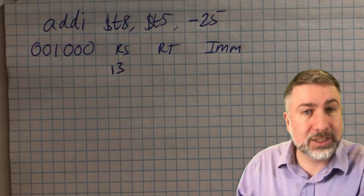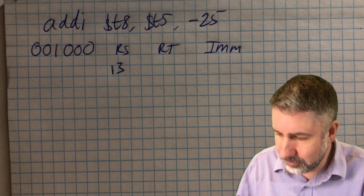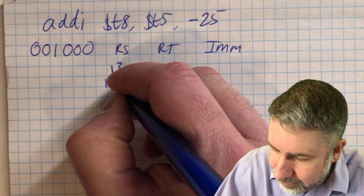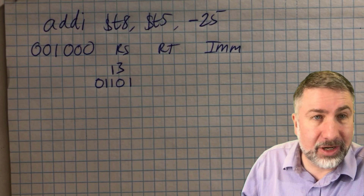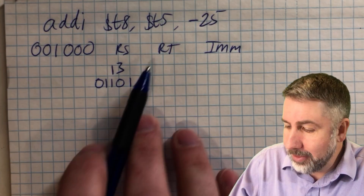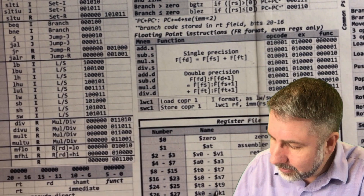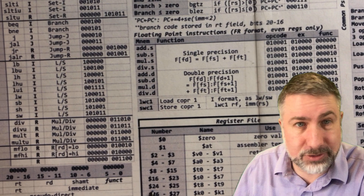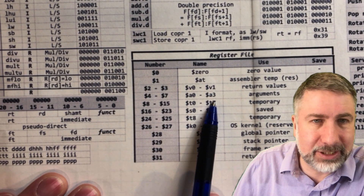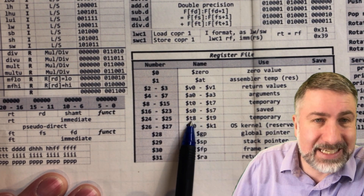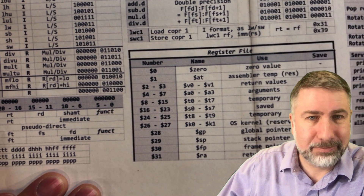Register 13 in binary: counting up from 8, that's 8+4+1 = 13, so it's 01101. Remember registers are five bits long. Then RT is T8. T8 is register 24 — don't get confused, T8 is not register 16, it's register 24. Register 24 is 16+8, which in binary is 11000. So RT is 11000.